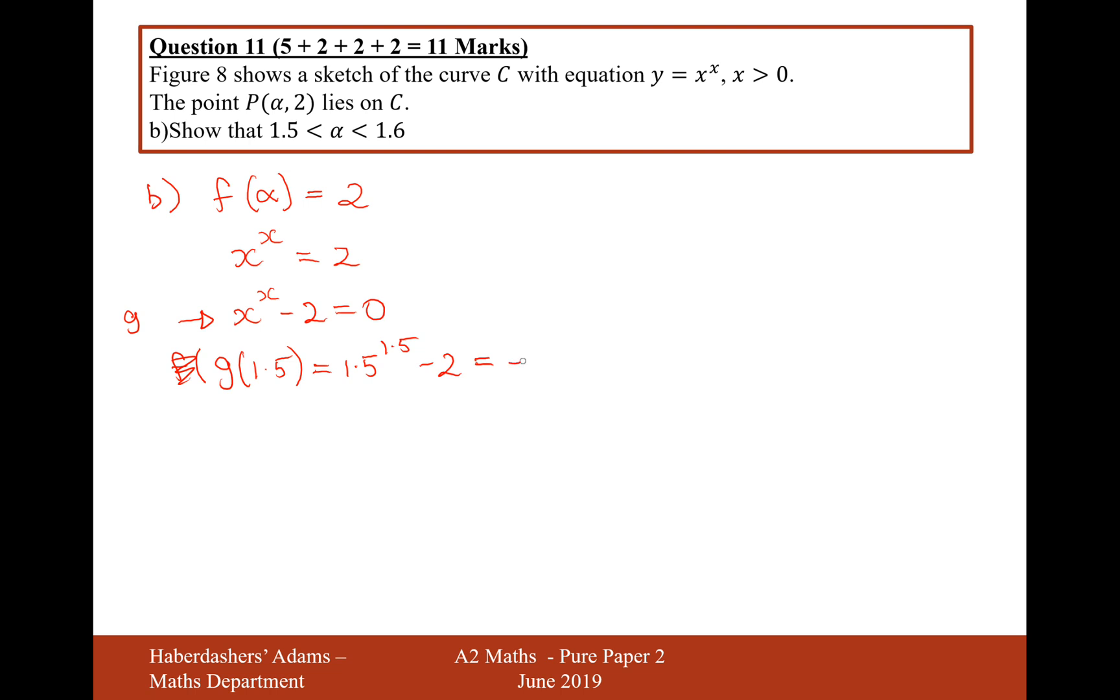g of 1.5 is 1.5 to the power of 1.5 minus 2. And that gives us an answer of minus 0.16. And g of 1.6 will give us 1.6 to the power of 1.6 minus 2. And that gives us an answer of 0.12. And now we can use that change of sign formula.